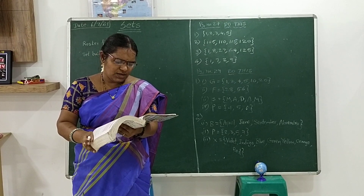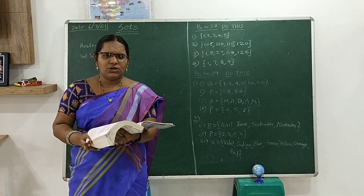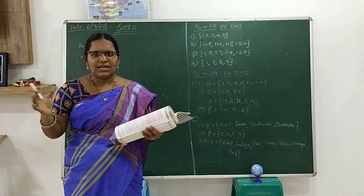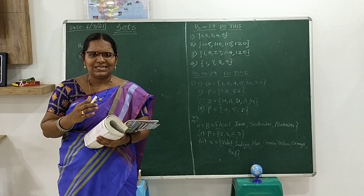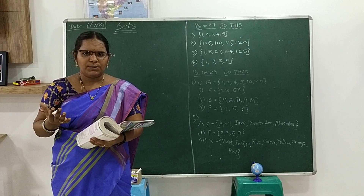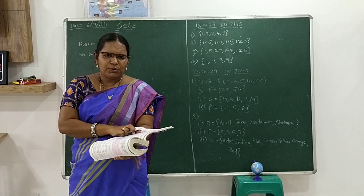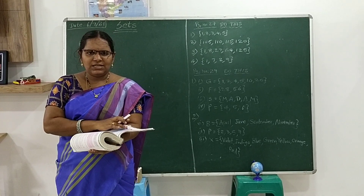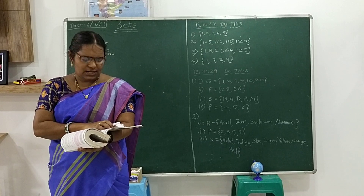Identify and write the common property of the following collections. A set means the collection of things which follow the same rule, which have the common property. We have to find the common property that is there in the given numbers.